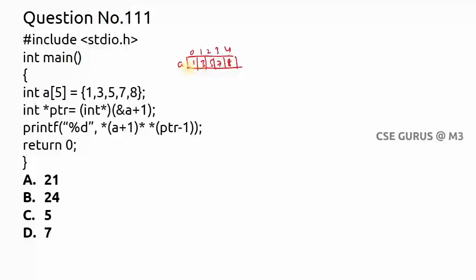When we write a of 5, the memory allocation will be like this — elements are stored in an array. For int pointer initialized with ampersand a plus one: when we write ampersand a and then plus one, the compiler takes the address of the pointer which is the next address after the completion of this array. Let's say the base address is 2000; since integer takes 4 bytes, addresses are 2000, 2004, 2008, 2012, 2016.